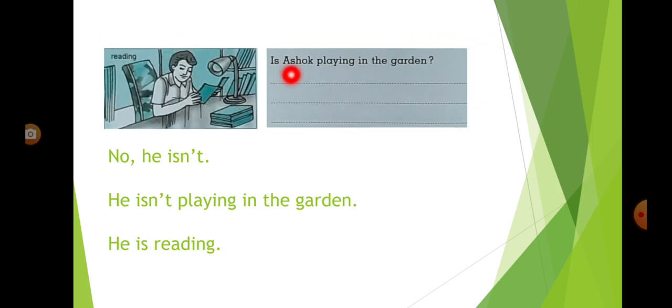Now here. Is Ashok playing in the garden? Can you see Ashok playing in the garden? No. What is he doing? He is reading. So no, he isn't. He isn't playing in the garden. He is reading.